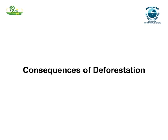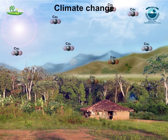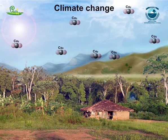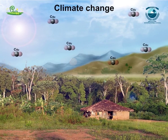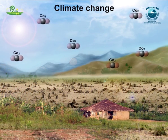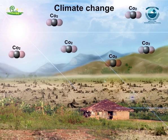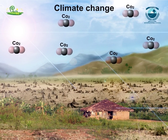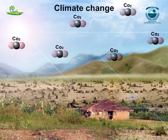Consequences of deforestation: Climate change. Trees absorb carbon dioxide during photosynthesis. Fewer trees would mean that less carbon dioxide will be absorbed, resulting in an increased amount of carbon dioxide in the atmosphere. This will lead to global warming, as carbon dioxide traps the heat rays reflected by the earth and increases the earth's temperature.